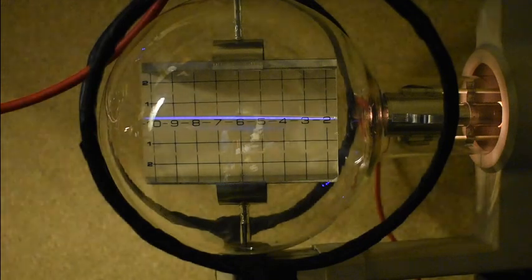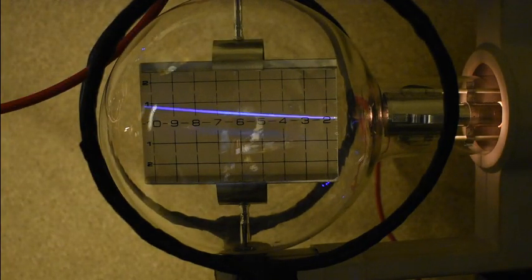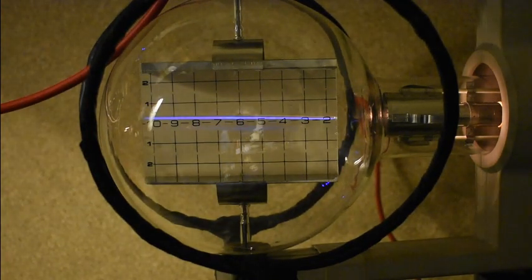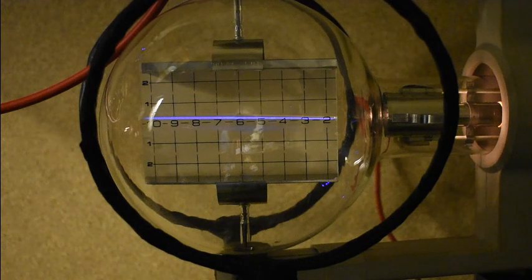So I can apply a current through the coil and deflect the beam. Or I can apply a voltage across the plates and deflect it.